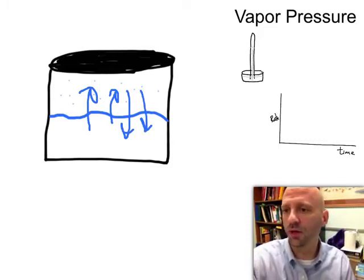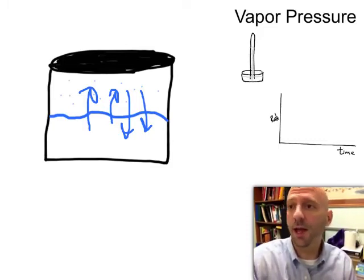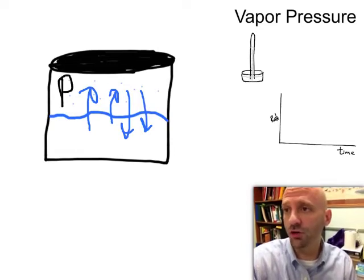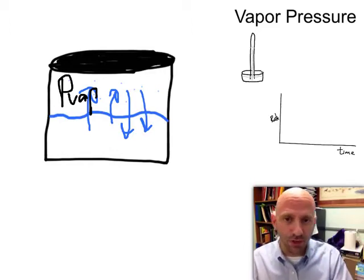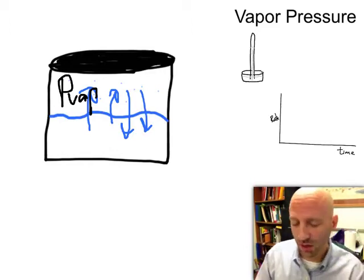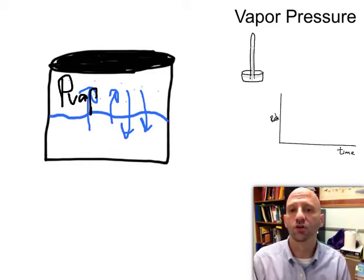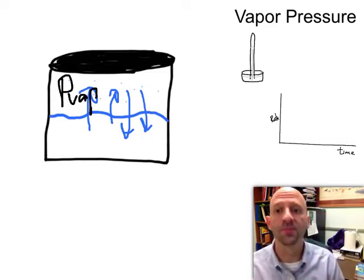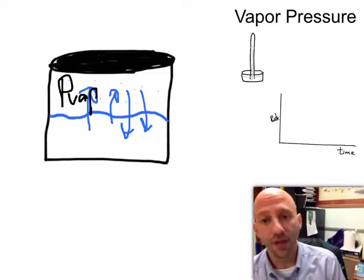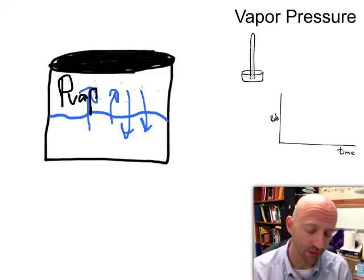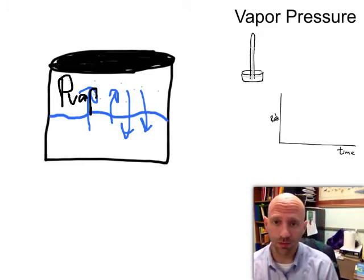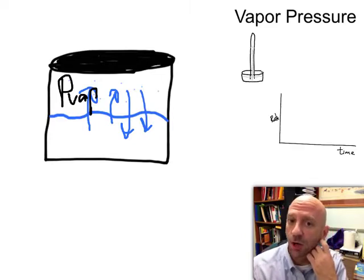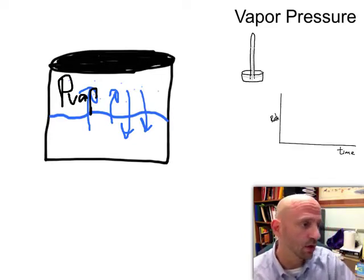And when we get to that point, when we get to that equilibrium point, then we can go ahead and measure the pressure that the liquid creates by evaporating some of its molecules into the gas phase to create a gaseous pressure. That's going to be our vapor pressure of a liquid. So that's what we're getting at. We're getting at ultimately a property of a liquid by way of measuring how much of it can turn into a gas.